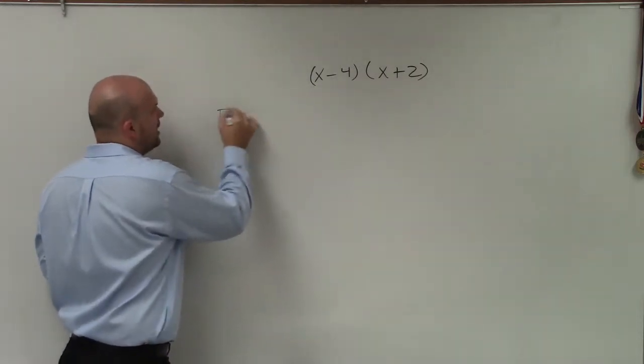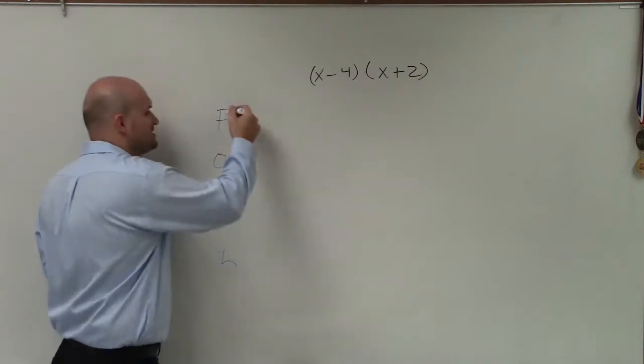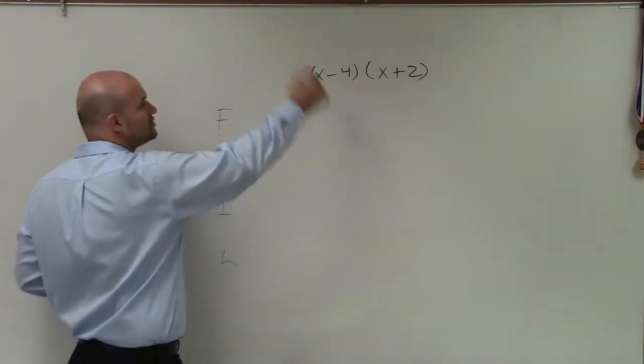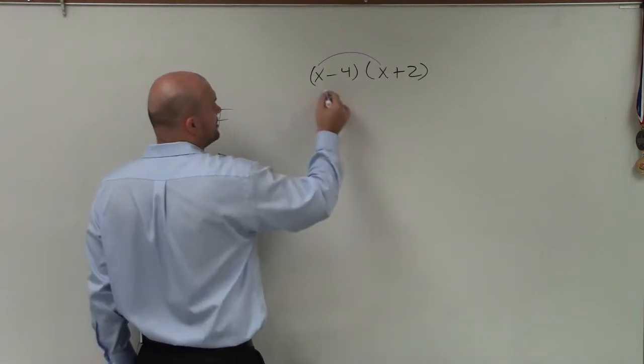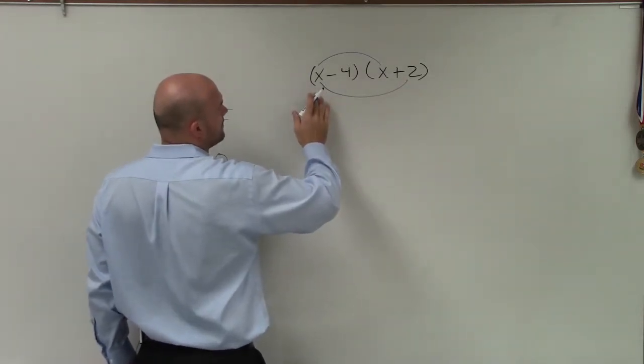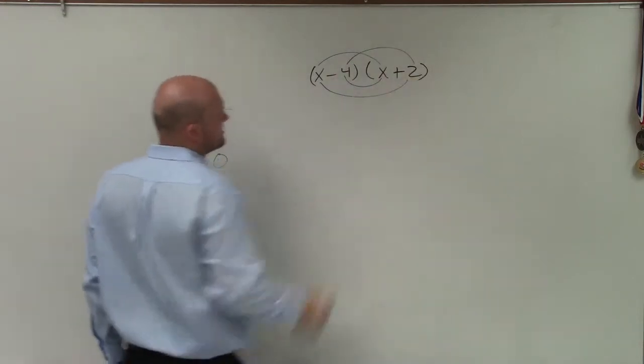So when doing foil, again, foil is just an acronym that we like to remember, where foil represents the first, outer, inner, last. And so I'm going to represent that by drawing lines of what I want to multiply. So the first represent here, the outer represent here, the inner represent here, and then the last represent here.